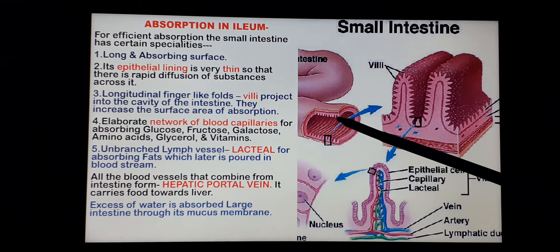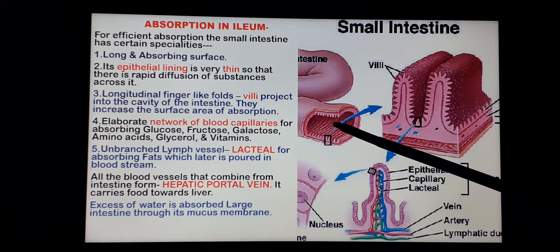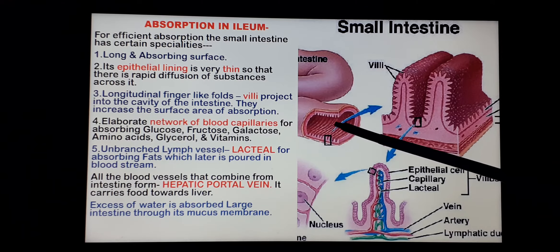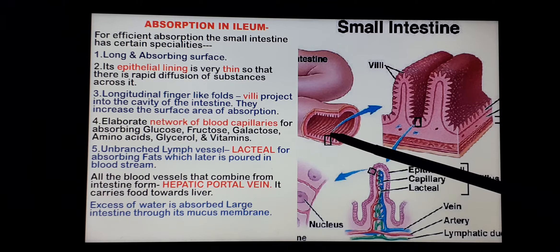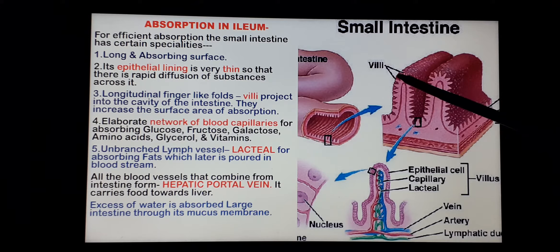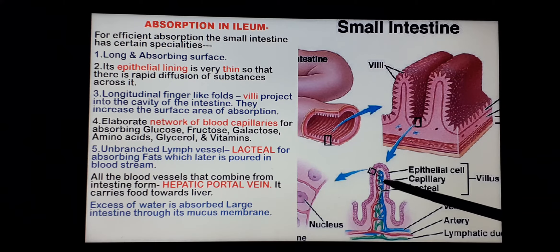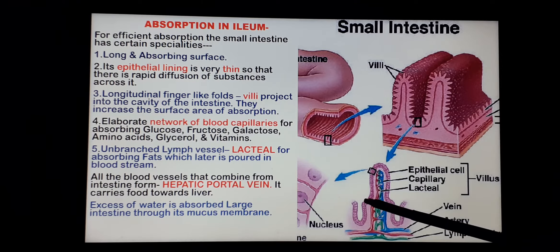We know that ileum is very long and it has a large absorbing surface because the inner lining of the ileum has a lot of folds. In each fold, there are various projections called villi. Each of these finger-like villi is structurally adapted for absorption. We can see that the epithelial lining has very thin cells.